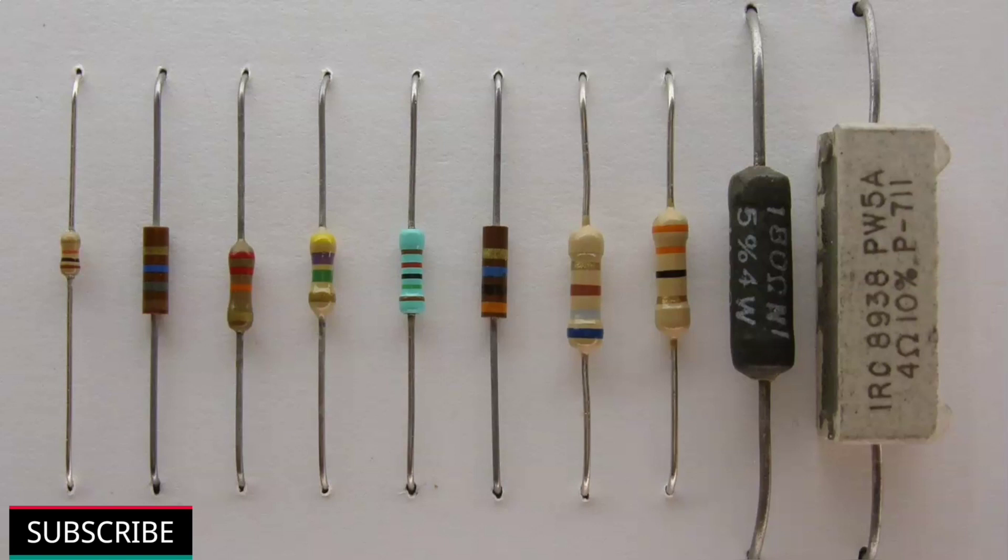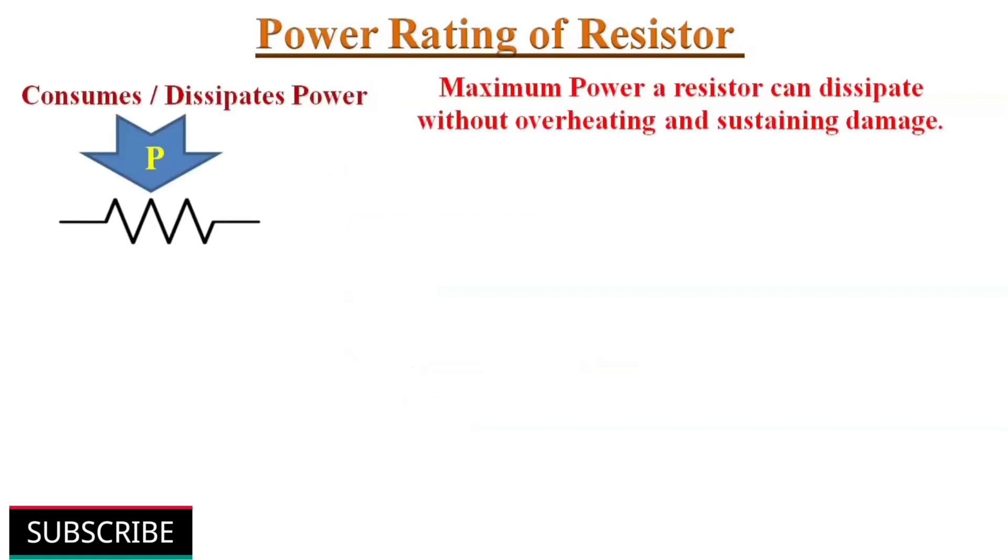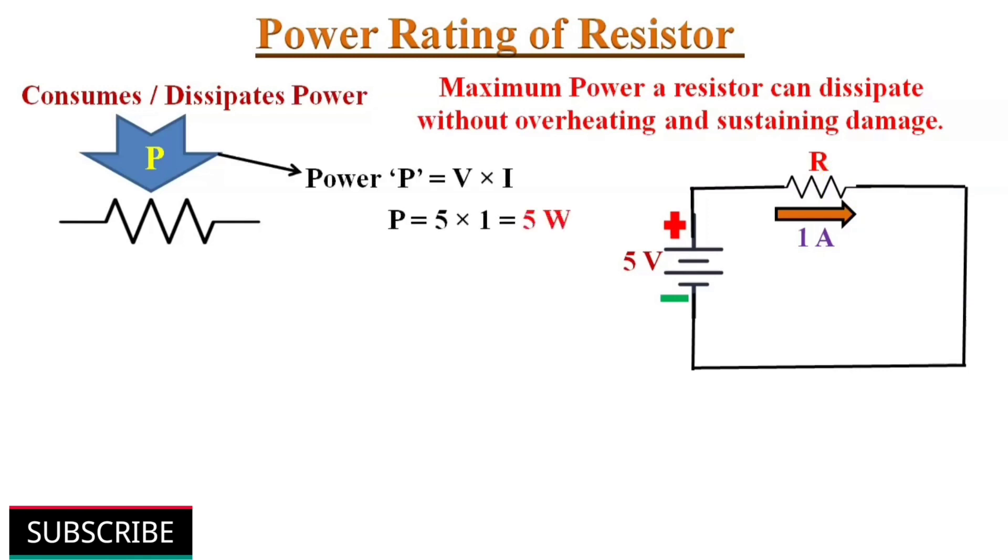Now let's see the different characteristics of resistors which we should consider before selecting a particular resistor for particular application. The first one, power rating of resistors. As we know, resistors consume power. The power rating of a resistor defines the maximum power it can dissipate without overheating and sustaining damage. Suppose if 5 volts is applied across a resistor and 1 ampere current is flowing through it, then the power dissipating across that resistor is P equals V into I, that equals 5 watts.